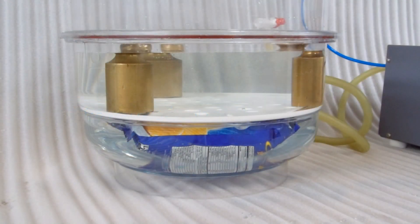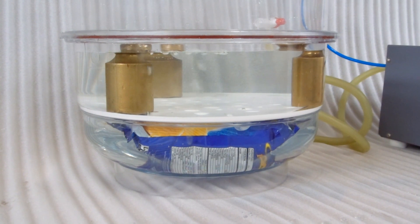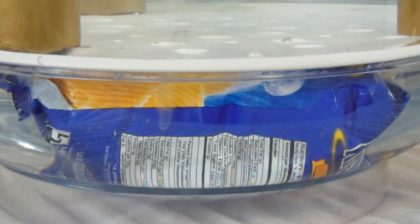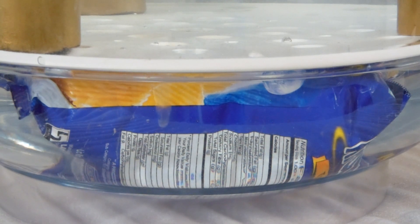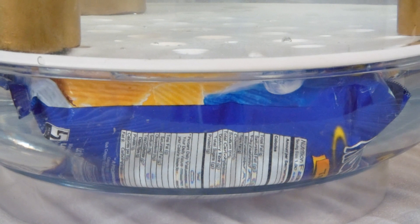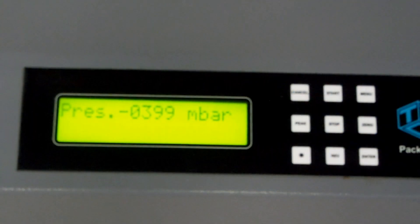If there is any leakage, a constant stream of air bubbles will start coming out from the leak point. Observe the leakage. If you do not find any air bubbles, then there is no leakage.